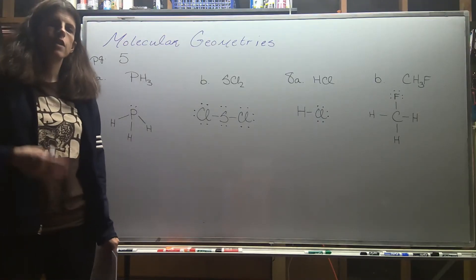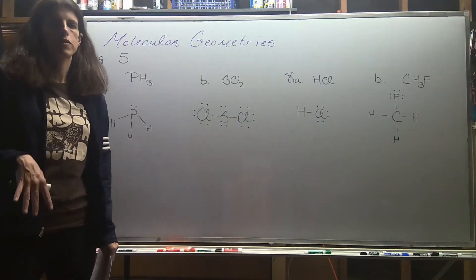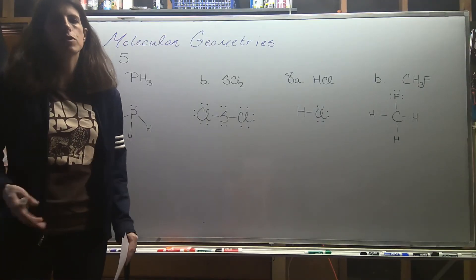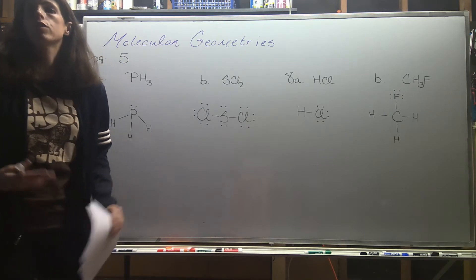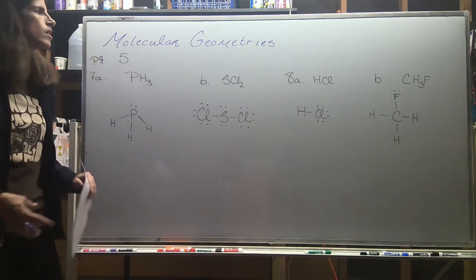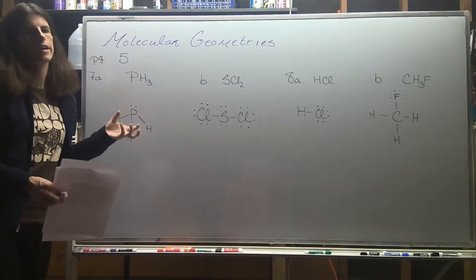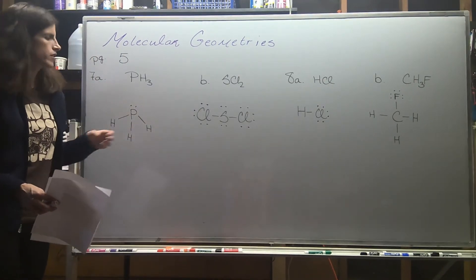Now that you've learned how to draw all types of different Lewis dot structures, it's time to start considering their shapes. The shapes are known as molecular geometries.